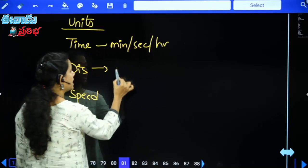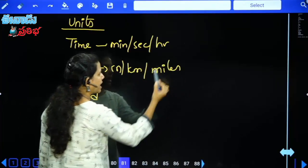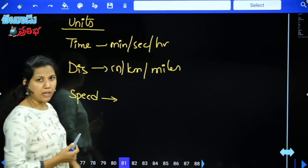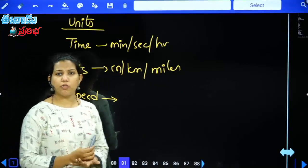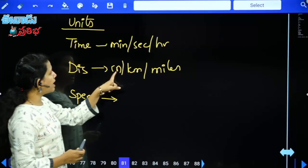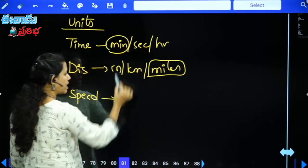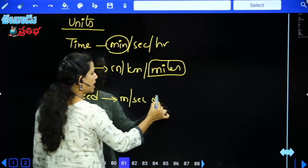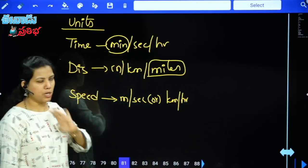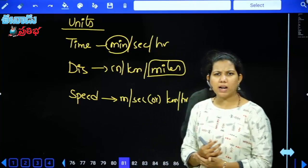For distance, we use meters, kilometers, and miles. Miles are very rare. Mostly meters and kilometers. Speed = Distance / Time, so speed units are meters per second and kilometers per hour. We can also use meters per hour. The most common speed units are meters per second and kilometers per hour.